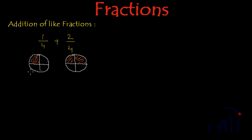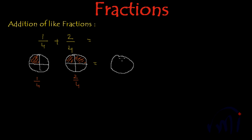So this represents 1 by 4 and this one represents 2 by 4. So if we add them, what do we have to do? I'll draw 1 pizza. Since both of them are divided into 4 equal parts, I'll divide this pizza also into 4 equal parts.